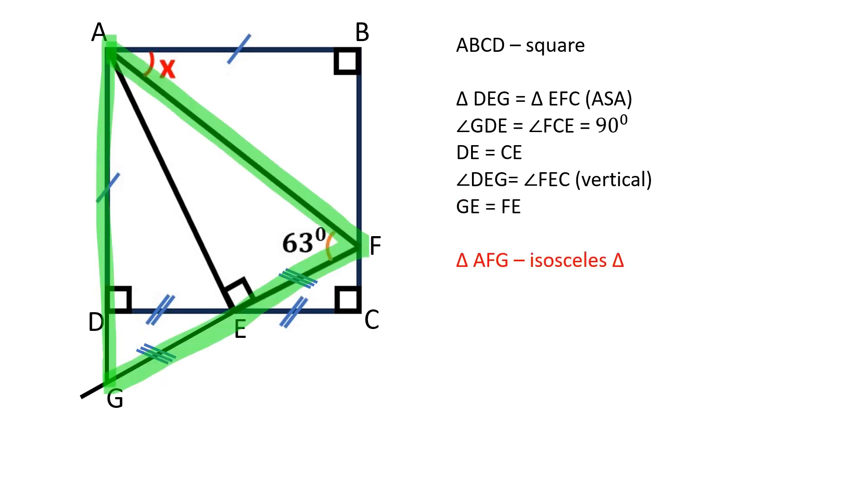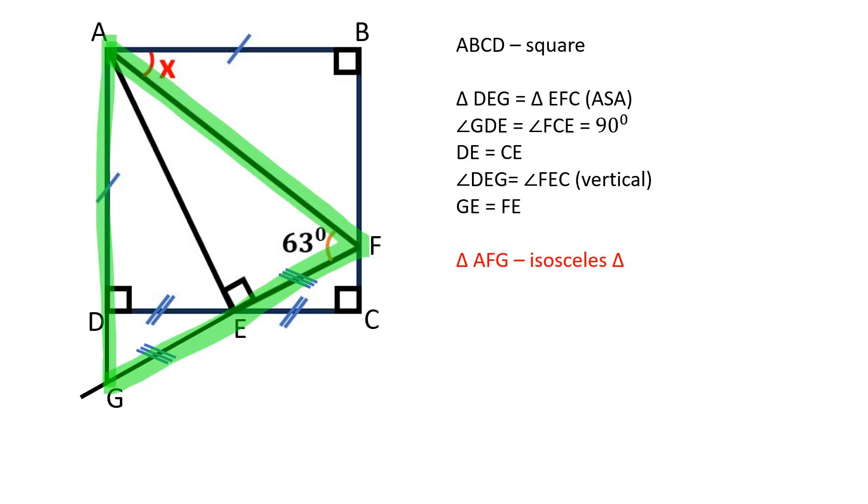Triangle AFG is an isosceles triangle because in an isosceles triangle the median to the base is perpendicular to the base. AE is a median and an altitude.